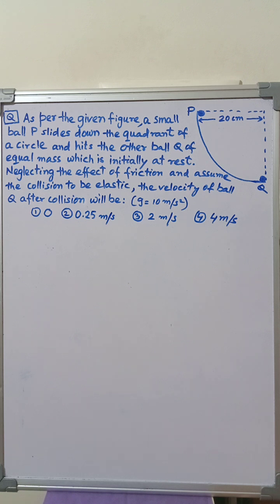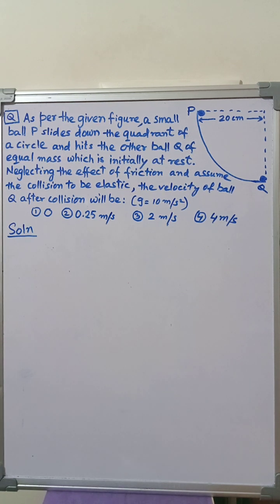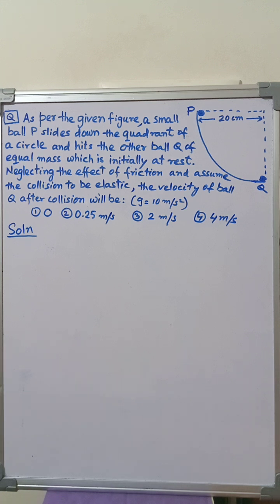We are required to find the correct option. For the solution, we will be using the concept that in an elastic collision of two bodies of equal masses, velocities will be interchanged. Let us understand this concept from the theory of elastic collisions.